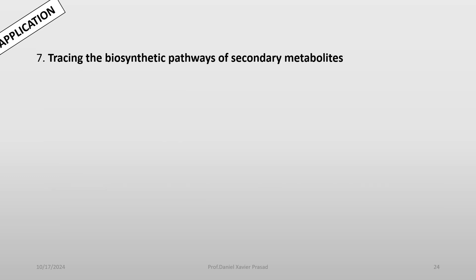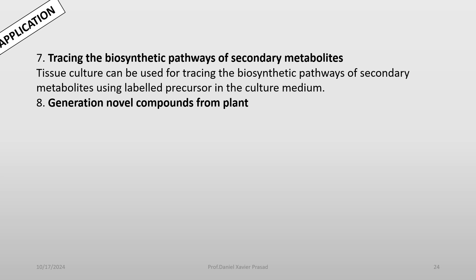Number seven is tracing the biosynthetic pathways of secondary metabolites. Biosynthetic pathways are studied by means of labeled compounds and isotopes. Tissue culture can be used for tracer techniques, tracing the biosynthetic pathways of secondary metabolites using labeled precursors in the culture medium. Students will study tracer techniques in the next semester — this is a very interesting application in tissue culture.